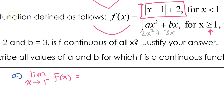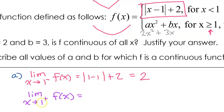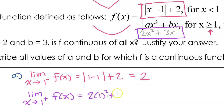For the limit as x approaches 1 from the left, the function is defined by the absolute value of x minus 1 plus 2. By direct substitution, we get the absolute value of 1 minus 1 plus 2, which is 0 plus 2, so the limit is 2. For the limit as x approaches 1 from the right, the function is defined by 2x squared plus 3x. By direct substitution, we get 2 times 1 squared plus 3 times 1, which is 2 plus 3, equaling 5.